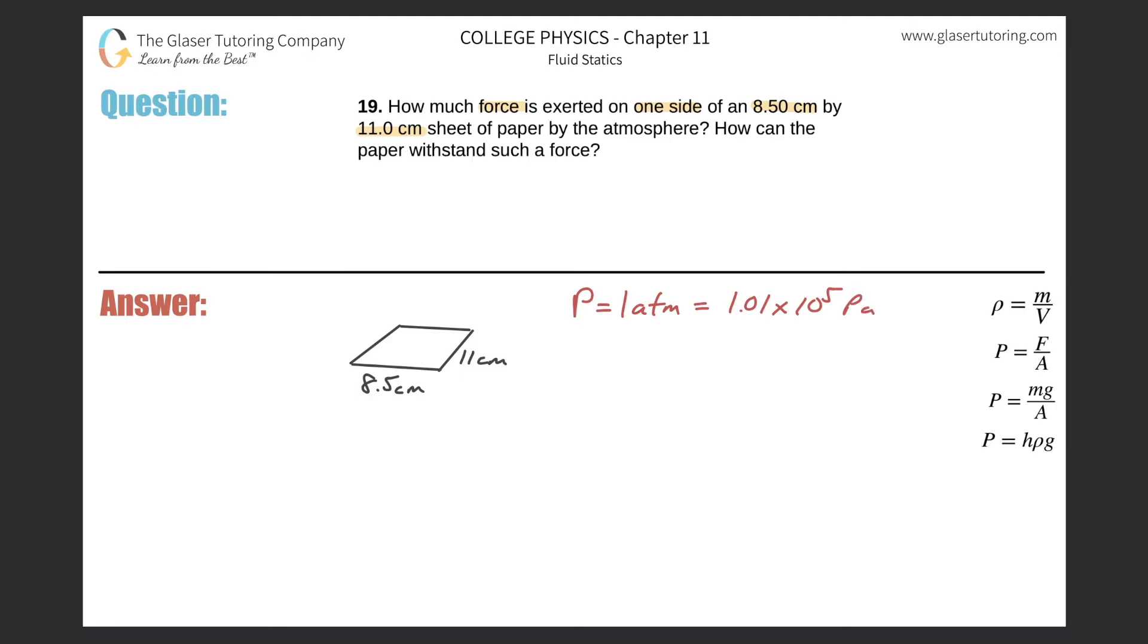So basically, this problem is fairly straightforward. If we know the pressure at sea level and we know the area, obviously I didn't calculate it yet, but it's a rectangle. Now remember though that the units have to be in terms of meters. We can easily then calculate the force by using this particular equation over here. We have pressure is equal to force over area, so to find the force it's simply the pressure multiplied by the area.